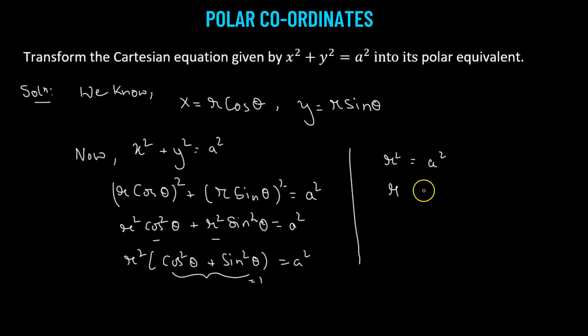If we take the positive square root, then we have r equals a. So this is the polar equation, and it is equivalent to its Cartesian form, which is x squared plus y squared equals a squared.